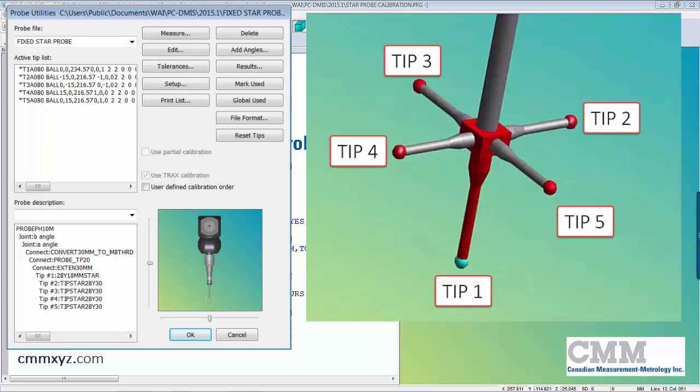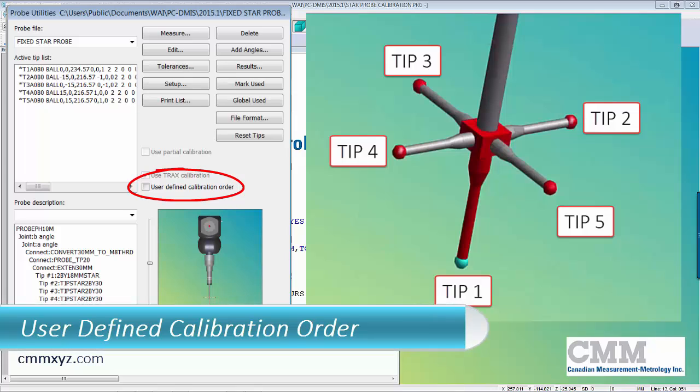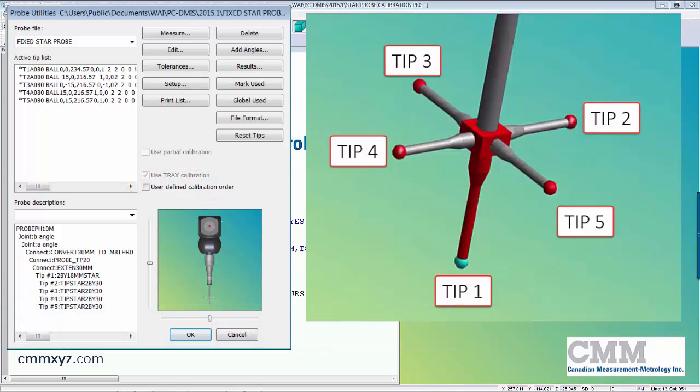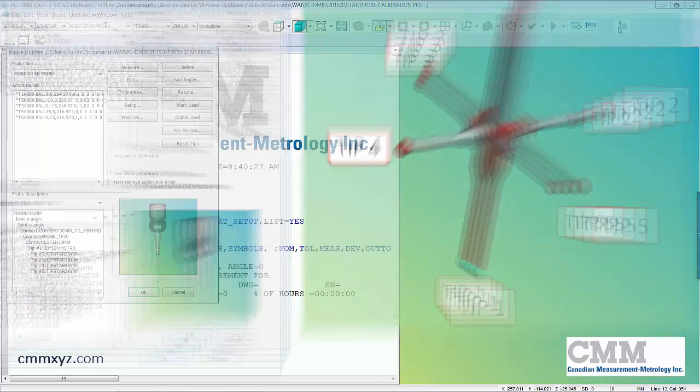As we calibrate you'll see each tip calibrate in order from 1 through 5. We can change the order but in this case we'll keep it simple and just go 1 through 5. Later when I play the calibration I'll explain which tip is being calibrated at which time.